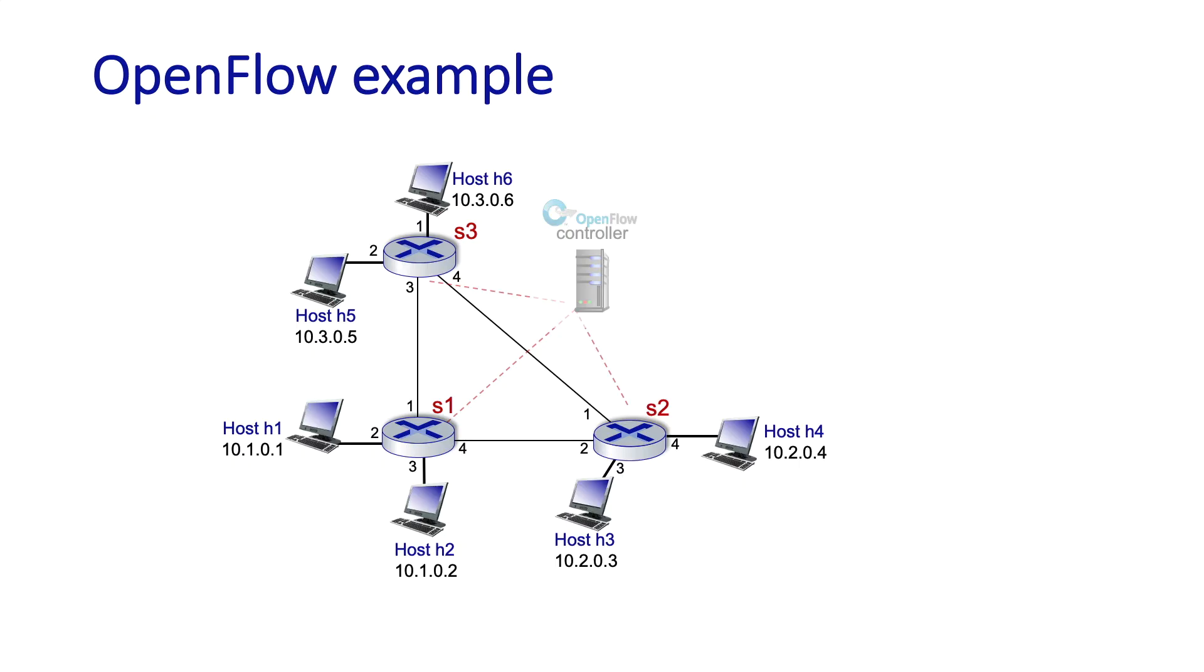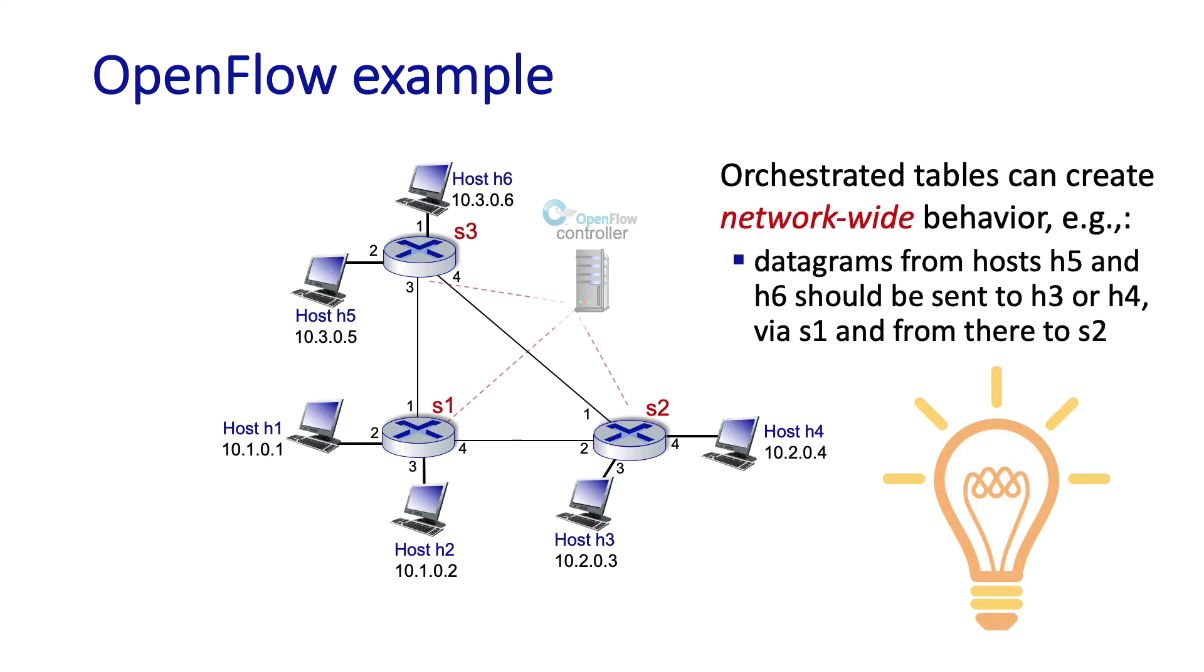When we get to the network layer control plane and software defined networking, we'll see how this is done. But this should hopefully make some sense to you already. If we can craft the individual forwarding tables in all routers in the network, then we can implement any network-wide routing we actually want. We can compute the forwarding tables in an SDN controller, generate the tables via a program in the SDN controller and install them in the routers. In this case, there's no need for a routing protocol since the forwarding tables are computed in the SDN controller. That's a really powerful idea, but maybe one that hasn't quite been mainstreamed yet.